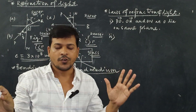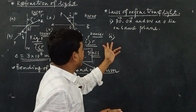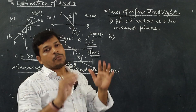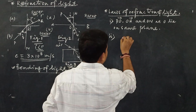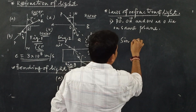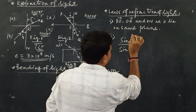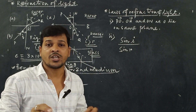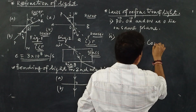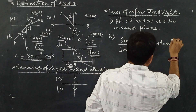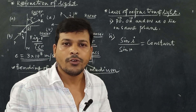The second law — very important for board exams — states that for a particular pair of optical media and a particular color of light, the sine of the angle of incidence bears a constant ratio with the sine of the angle of refraction. That is, sin i / sin r equals a constant, only for a given pair of optical media and a particular color of light.